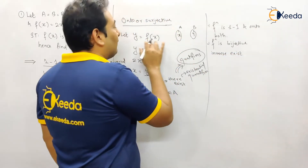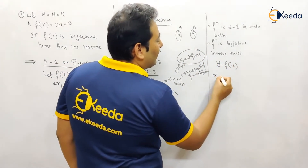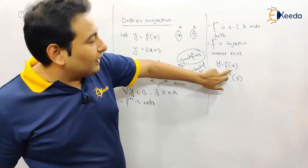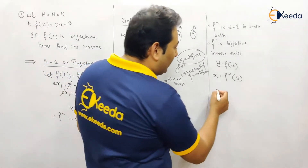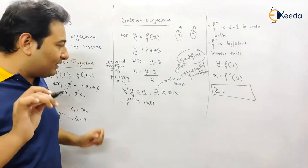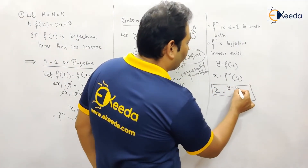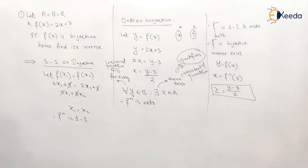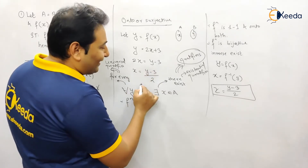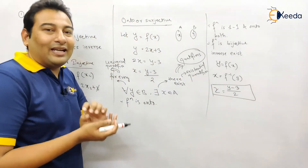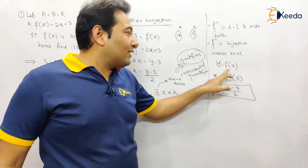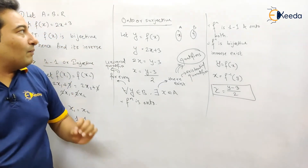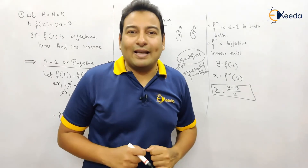To find the inverse, start with the same statement: y = f(x), which means x = f⁻¹(y). From the onto proof, we already found x = (y − 3) / 2. Simply write this down as it is — that is your inverse. So f⁻¹(y) = (y − 3) / 2. That's the procedure: y = f(x), then x = f⁻¹(y), and write down the expression. That's the problem done. In the next video we'll see one more example of the same type.